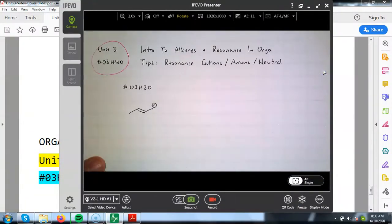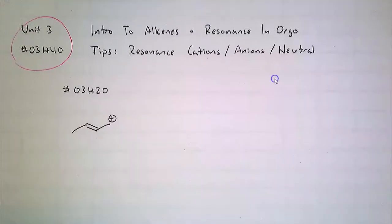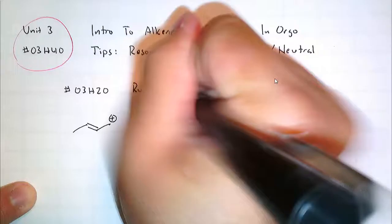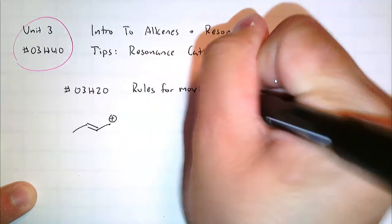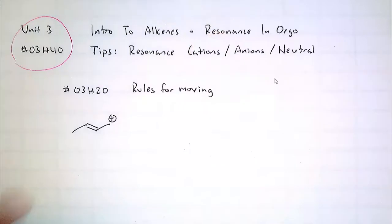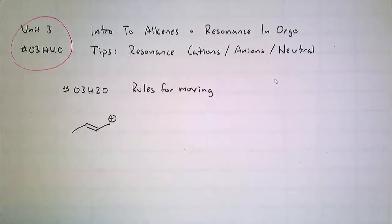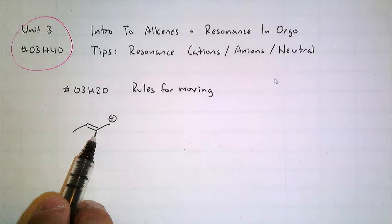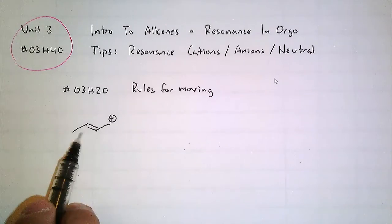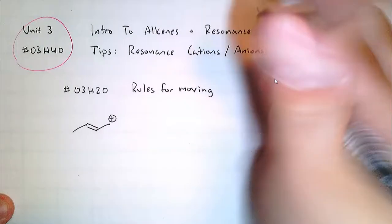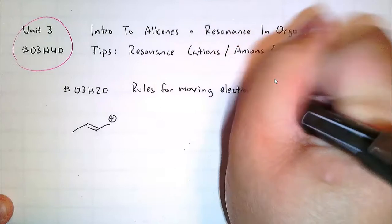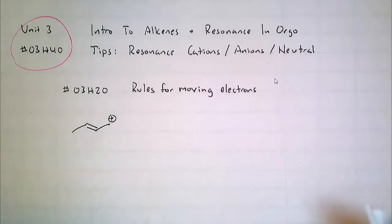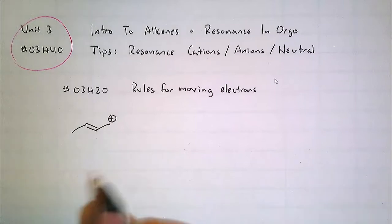In that previous video, we learned rules for moving electrons, because you can't just take a lone pair or a pi bond and put it anywhere you want — there were specific rules. Specifically, a pi bond can only move to the adjacent atom, or it can move to the adjacent bond in either direction. The thing is, you can follow those rules, but it doesn't guarantee that you'll get a valid resonance structure. You have to make sure that it follows all the other rules in terms of what's a valid structure.